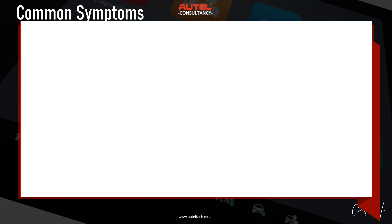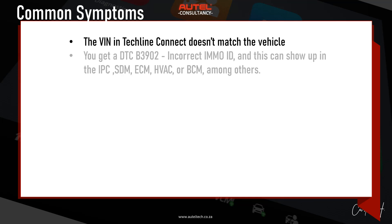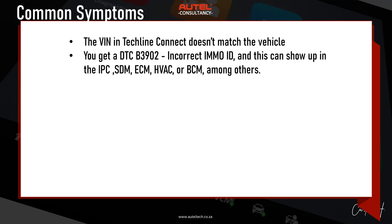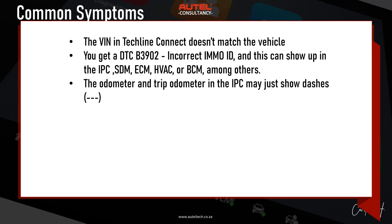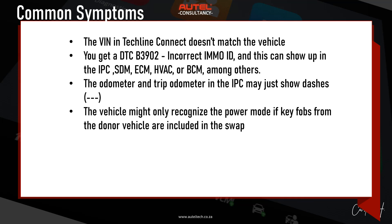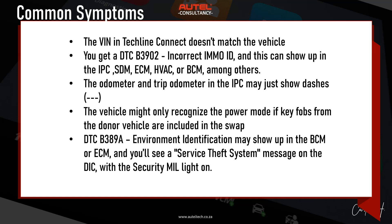Common symptoms you'll see when installing a used module on a Global A vehicle: the VIN in Techline Connect doesn't match the vehicle. You'll get DTC B3902 — incorrect EMID — which can show up in the instrument cluster, SDM, ECM, HVAC, or BCM, and you cannot delete this error code. The odometer or trip odometer in the IPC may show dashes. The vehicle might not recognize the power mode if key fobs from the donor vehicle are included in the swap. And DTC B389A — environmental identification — may show up in the BCM or ECM, along with a service theft system message and the security light on.